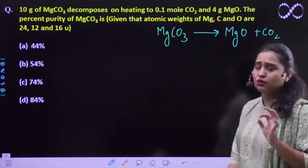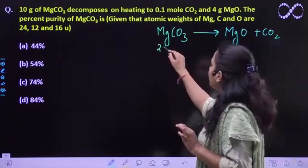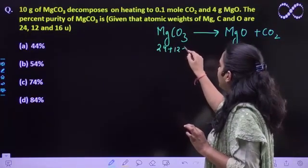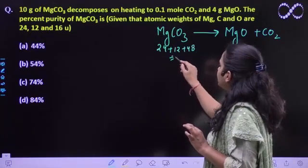MgCO3 molar mass is 84. Mg is 24 plus carbon is 12 plus 48, this is 84.